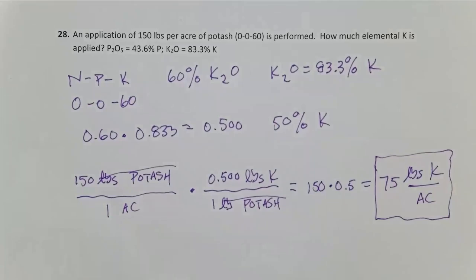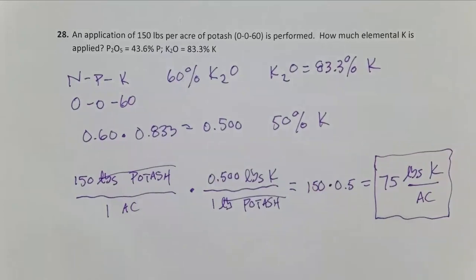Now we always do that one final check: did I apply more fertilizer than element? 150 pounds of fertilizer potash is indeed more than 75 pounds of our element, so it looks like I did that problem correctly. Now we know how to calculate the amount of element that's applied with a set amount of fertilizer.